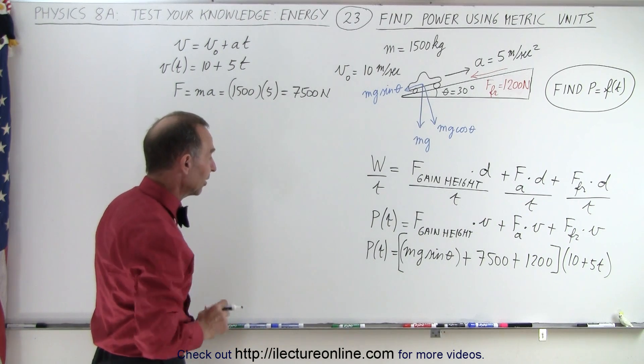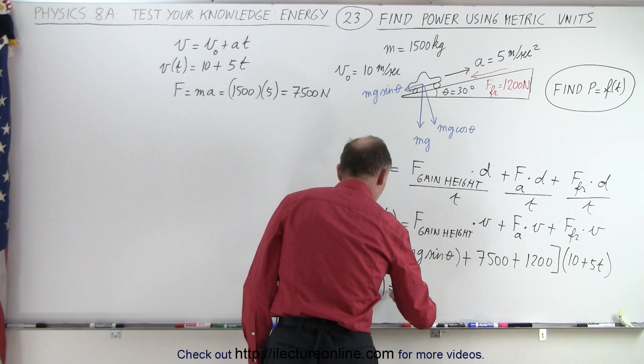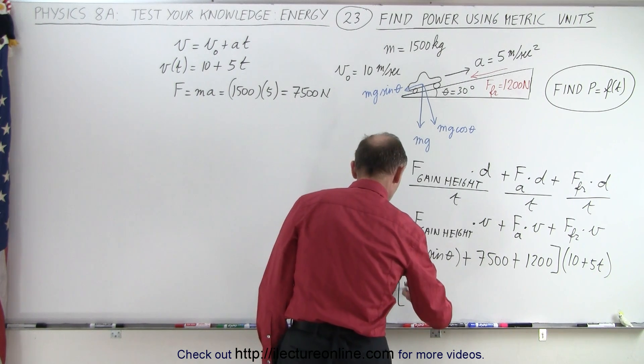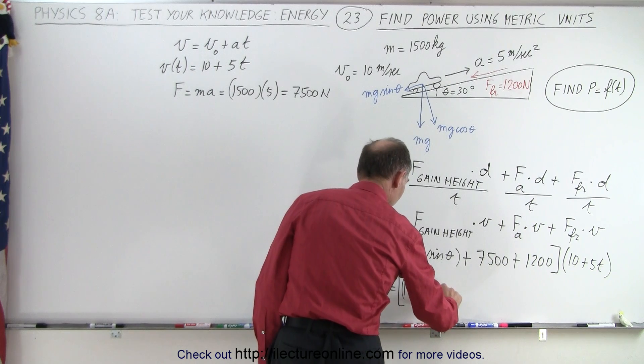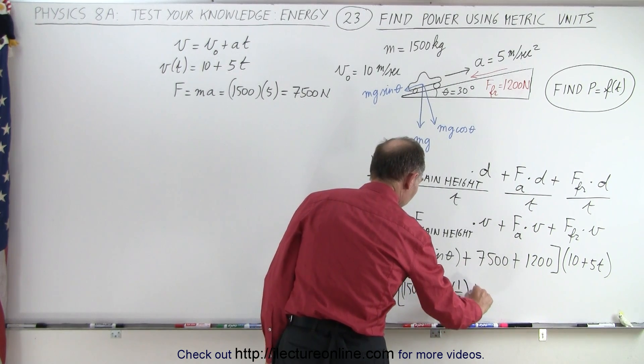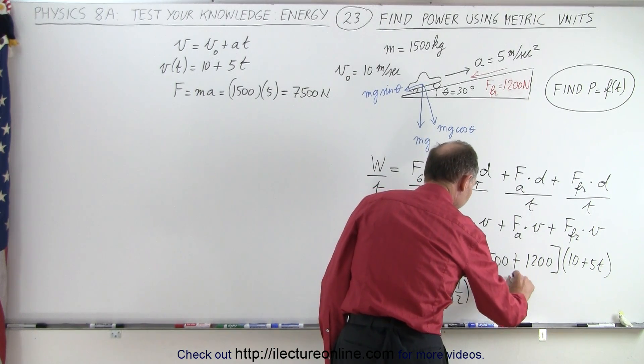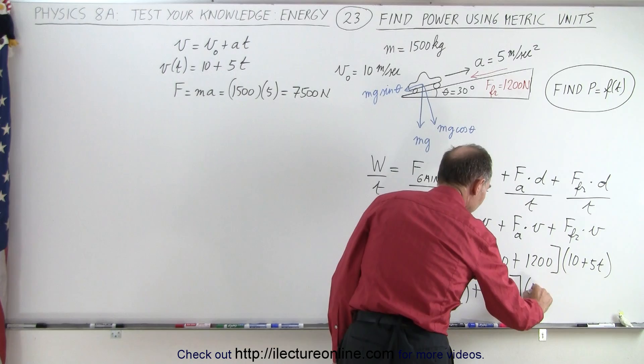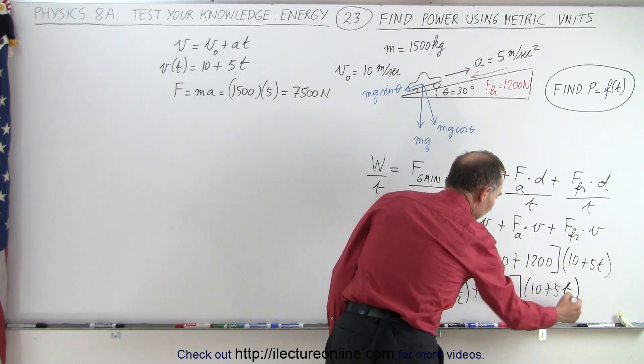Now we need to know what mg sin θ is. So the power as a function of time is equal to the mass, 1500, times g, which is 9.8, times the sine of 30, which is one half, plus 7,500 plus 1200 is 8,700, multiplied by 10 plus 5t.